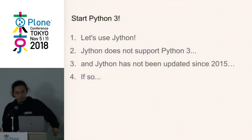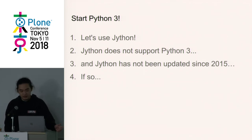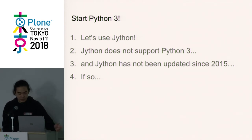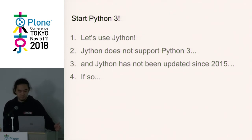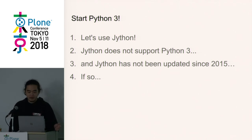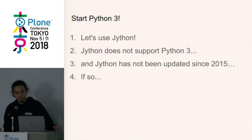Why did I want to do Python? That is because Python is attractive. Python is also ideal for making web applications easily and for machine learning. In addition, the language specification of Python is beautiful and simple. I like the Python specification. I like the philosophy of the Zen of Python, which is displayed when you run 'import this'.